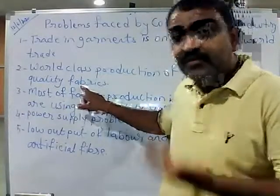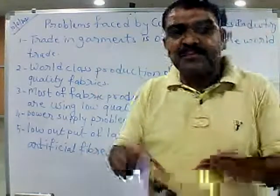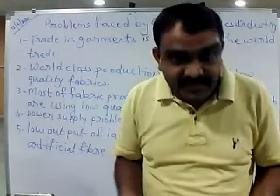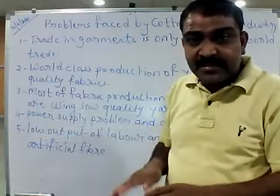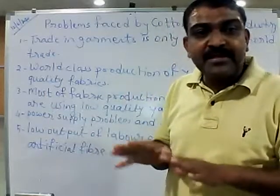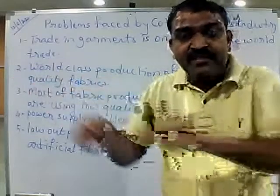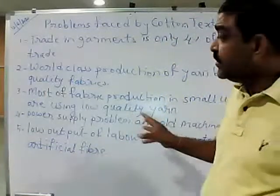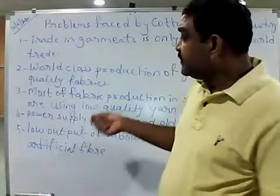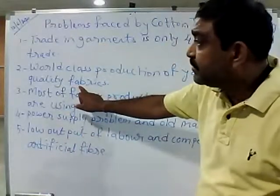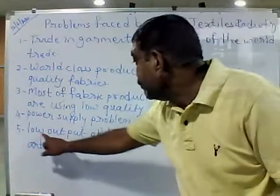In advanced countries like Japan, fabric manufacturing uses fully automated assembly-line production. The fabric is automatically cut, then assembled, designed, buttons are added automatically in an assembly line. Overall, the technology and machinery used there increases the output per laborer significantly compared to India's small manual units.